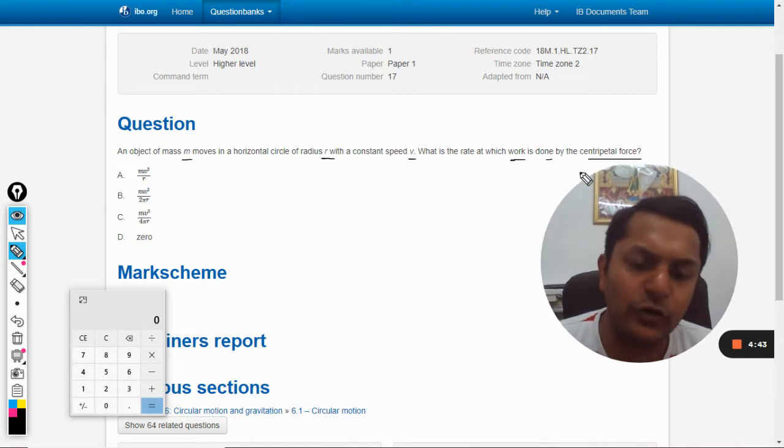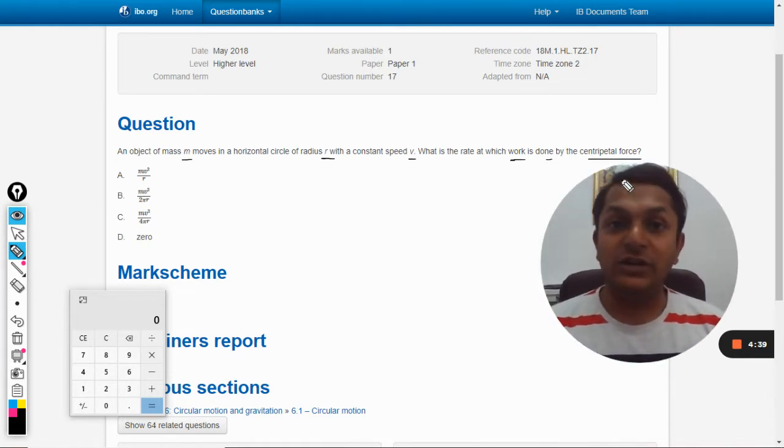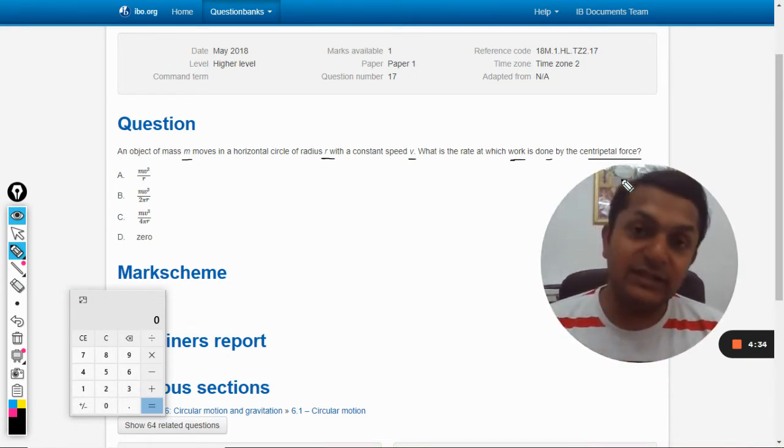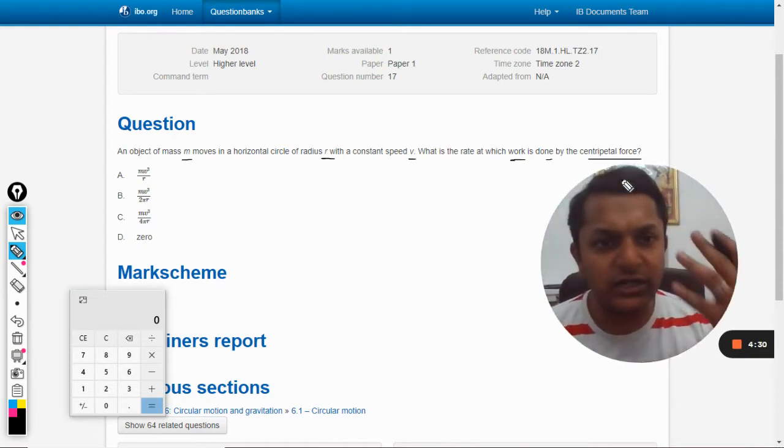Number one, he is not asking you about the work done by centripetal force, he is asking you the rate of doing work. It means he is actually asking you the power, so it's W divided by t. The answer will be zero.